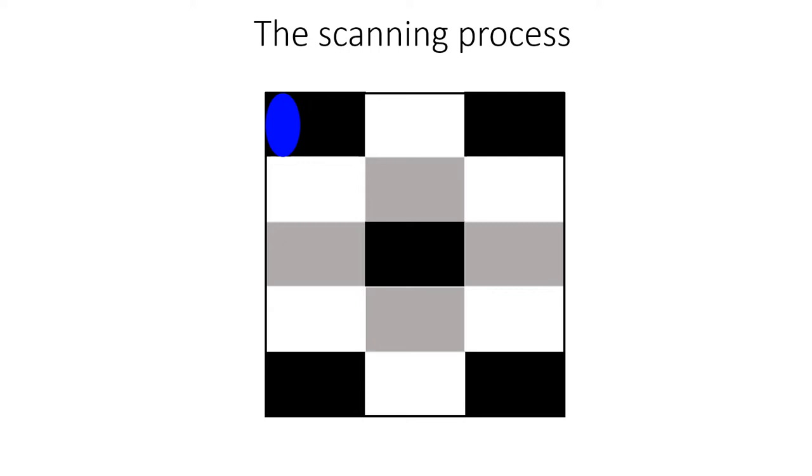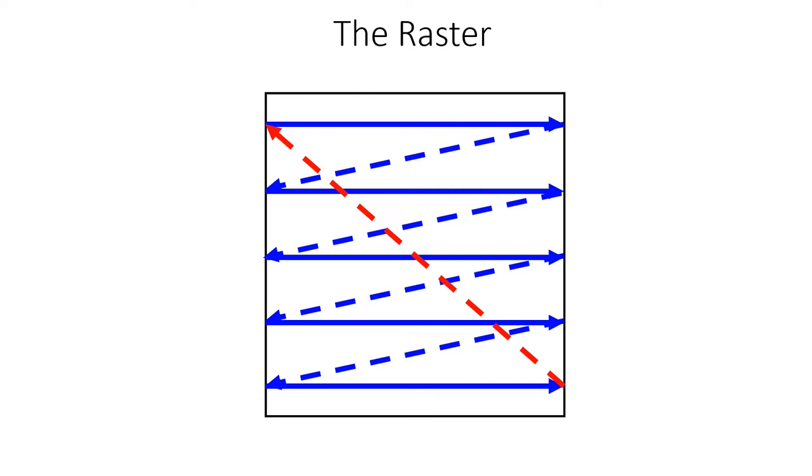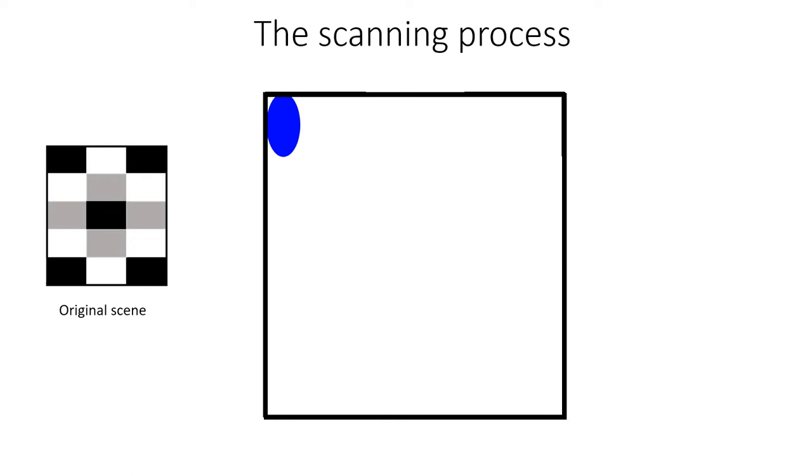The process then repeats for the next frame. The path followed by the spot is called a raster. The word raster comes from the Latin word rastrum, which means a rake. To recreate the scene at the receiver, the scanning spot draws the scene as the spot scans the raster.